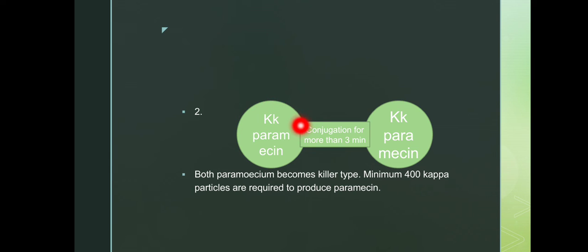Both now start producing paramecin. Both the Paramecium become killer type, and minimum 400 kappa particles are required to produce this paramecin.